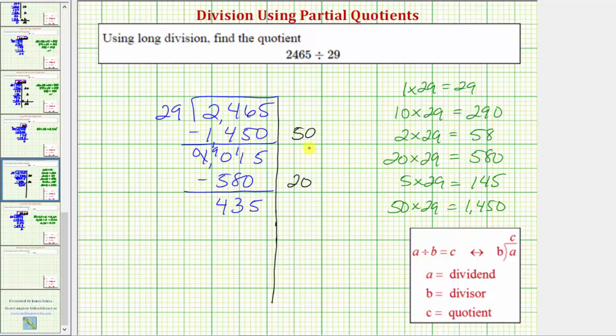Let's use 10 as our next partial quotient. So 10 times 29 is 290. We subtract. And now we have 145.